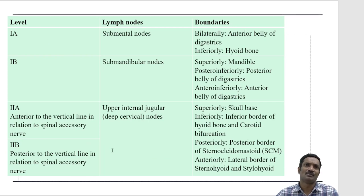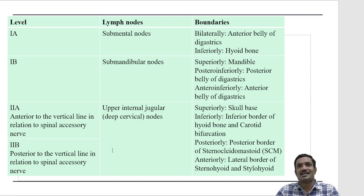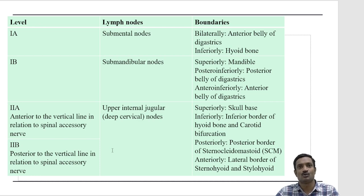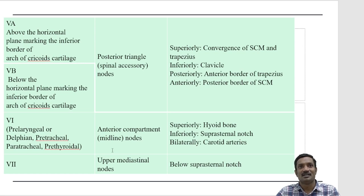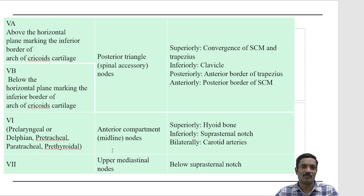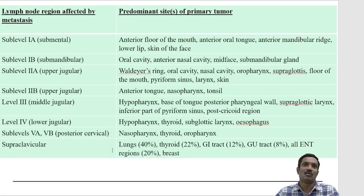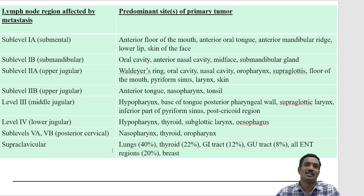Level 1 is divided into 1A and 1B. Level 1A contains the submental nodes, lying between the two anterior bellies of the digastric. Level 1B lies between the anterior and posterior bellies of the digastric and the mandible. Level 2 is divided by the spinal accessory nerve into 2A and 2B. Level 5 is divided into 5A and 5B by the lower border of the cricoid cartilage. Level 6 is the central compartment, and level 7 is the superior mediastinal lymph nodes.